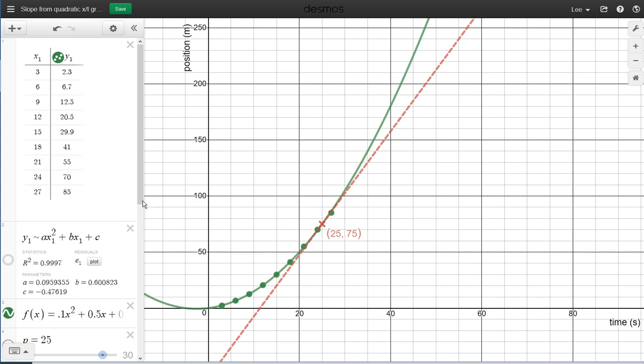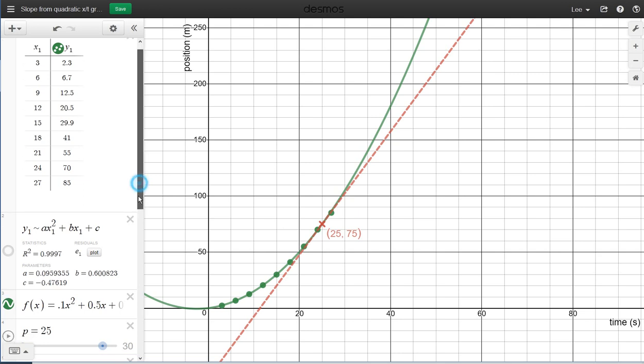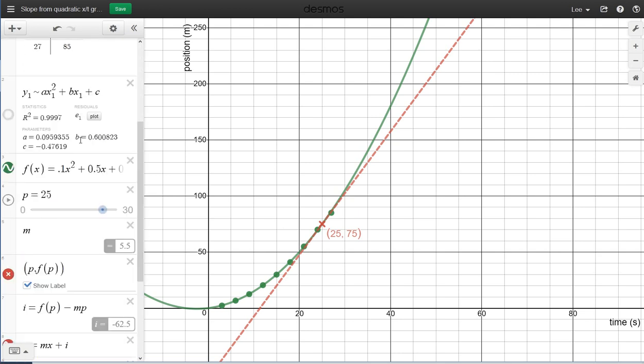So once your Desmos graph is complete, you've got your data entered there. Took your A, B, and C from regression, entered them here.